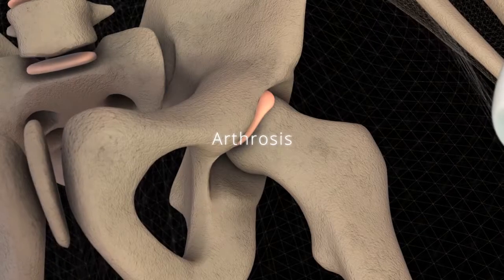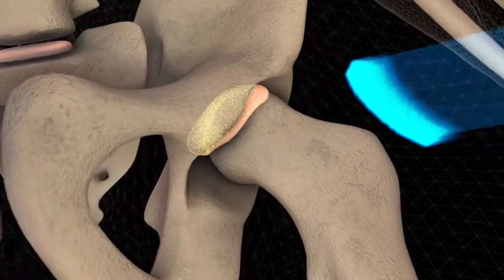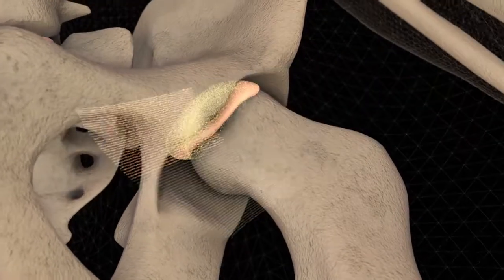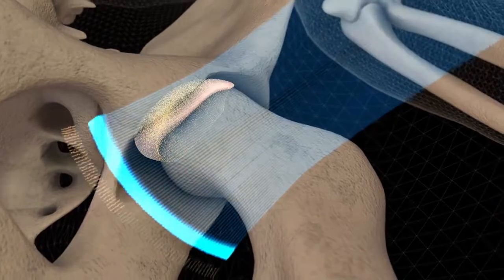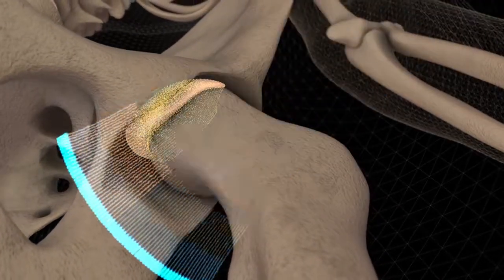REMS, thanks to ongoing developments, will make it possible to investigate other musculoskeletal tissues, like cartilage, in order to monitor the onset and evolution of diseases like arthritis.